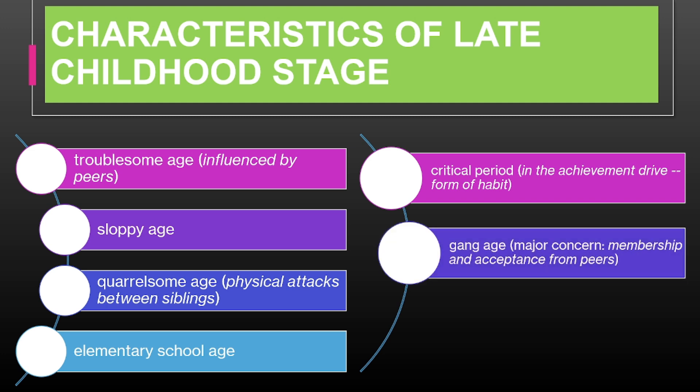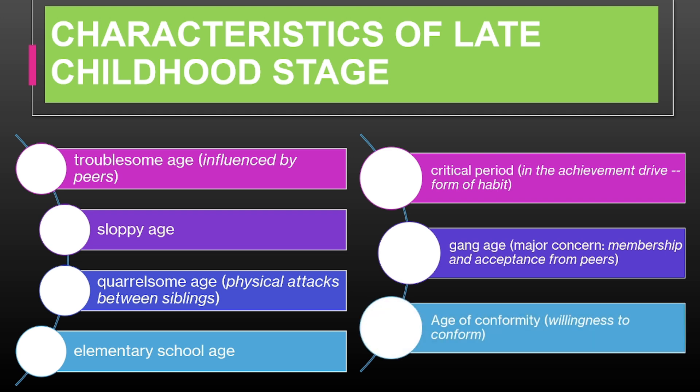Gang Age: peer acceptance becomes important, and children may seek membership in groups for social belonging. Compared to the previous pre-gang stage where social skills were only starting, in the late childhood Gang Age, belonging to groups becomes a primary concern alongside academics. A child might join a sports team or club to fit in with peers and establish their social identity. This stage is also described as the Age of Conformity, because children are more willing to conform to social norms and group expectations. For example, a child might adopt popular fashion trends or interests to fit in with friends at school.